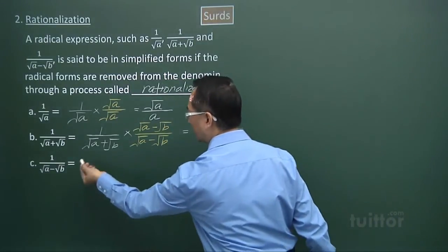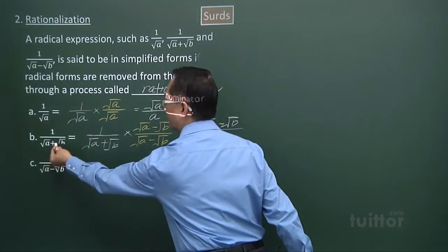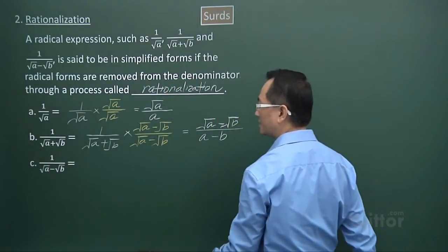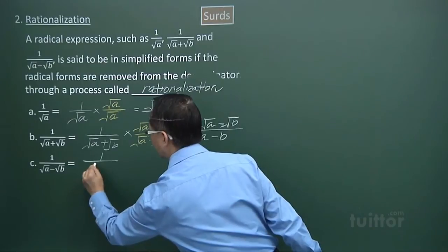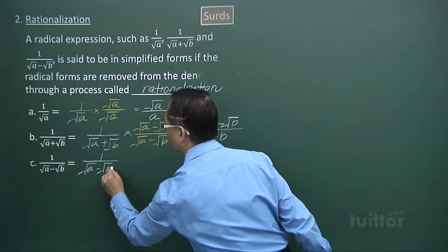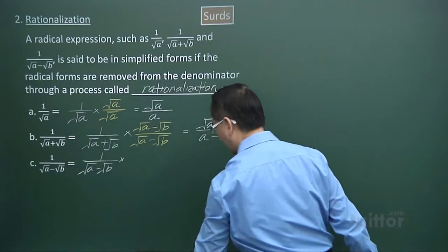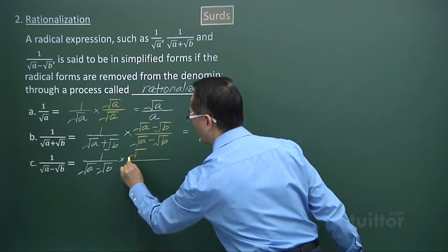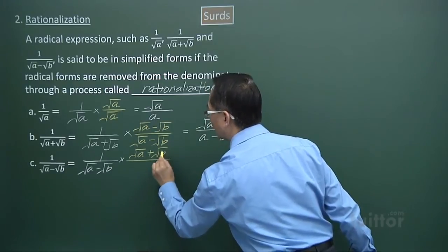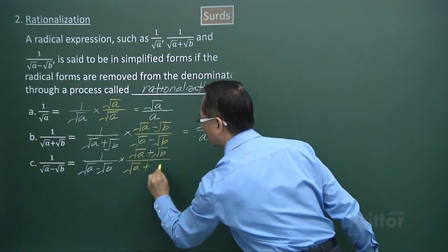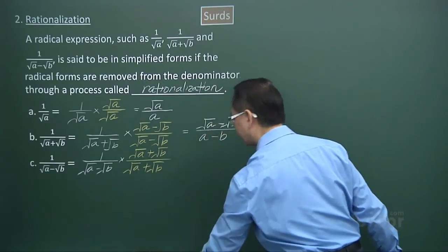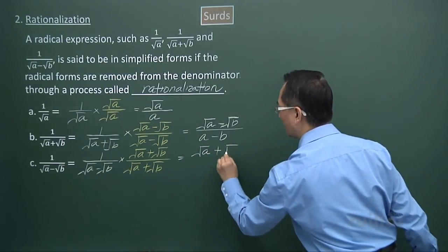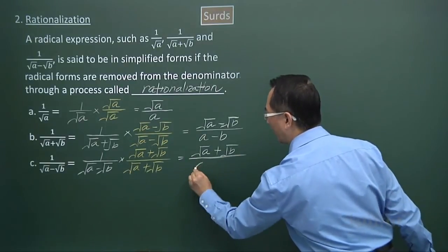For part c, the difference compared to part b is in the sign — the operator. Part b has minus, part c has plus. So it is just a matter of what is multiplied to the numerator and denominator. We choose square root a plus square root b to multiply to both numerator and denominator. The result is square root a plus square root b over a minus b.